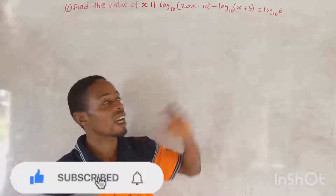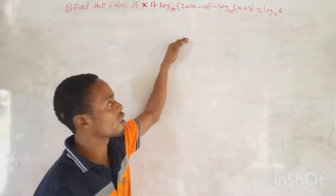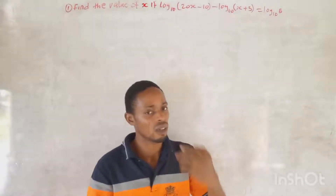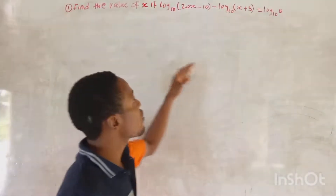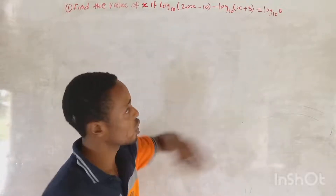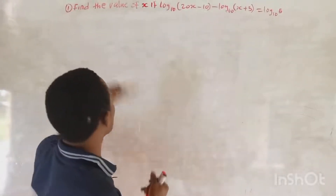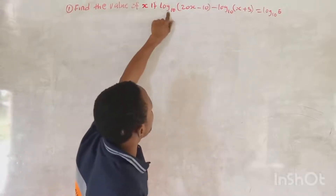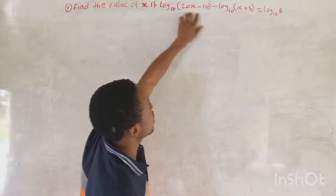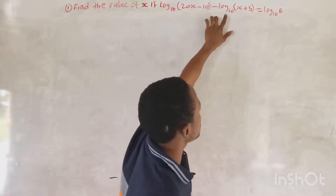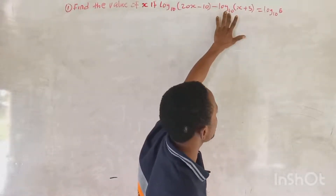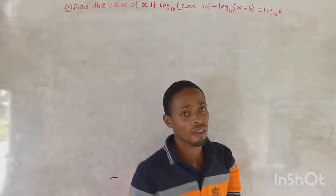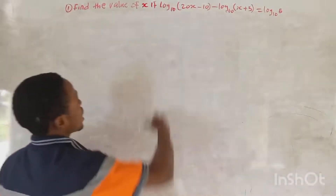For you to learn how you can solve this question, which is about log basing. Now log basing has its own rules and regulations, so in this case we can apply some rules to this question. When you are asked this question, it says: find the value of S, if log base 2 of (20S minus 10) minus log base 10 of (S plus 3) is equal to log 5.